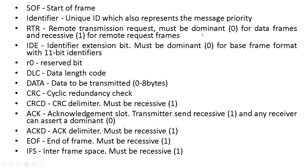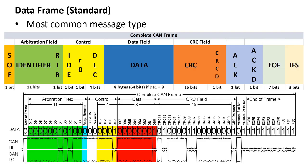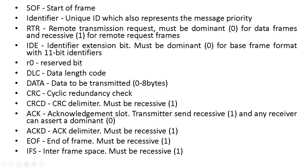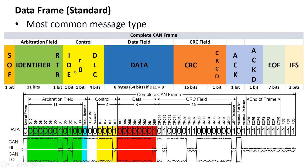Then we have the Remote Transmission Request bit, which must be dominant (zero) for data frames and recessive (one) for remote request frames. After that we have the IDE bit, which stands for Identifier Extension bit — this must be dominant zero for the base frame format. Then we have a reserved bit, followed by the Data Length Code (DLC) indicating how many bytes will be transmitted, encoded in four bits. Then we have the data field — if the DLC is zero, nothing is here; if the DLC is eight, we have eight bytes transmitted. Then we have 15 bits for the CRC, calculated by the controller based on what precedes it.